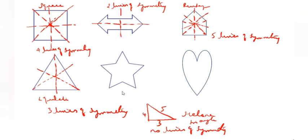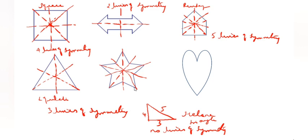This is 1, this is 2, this is 3, this is 4, this is 5 — 5 lines of symmetry. So this is 5 lines of symmetry. And this starting shape has only 1 line of symmetry.